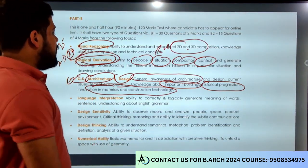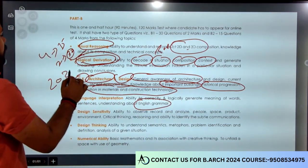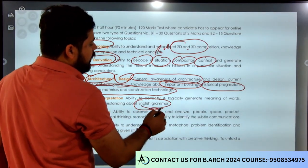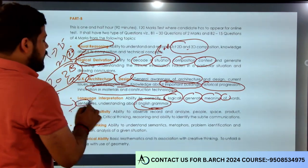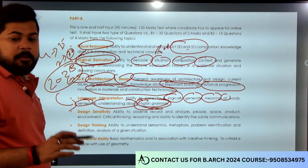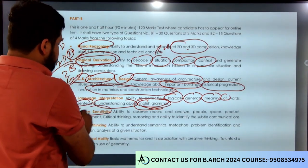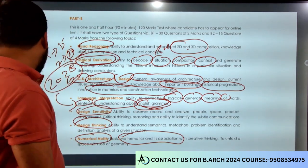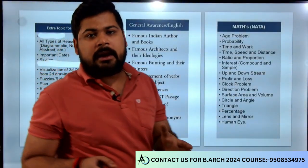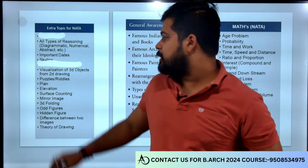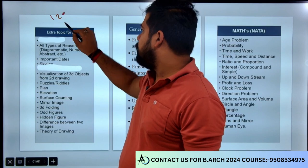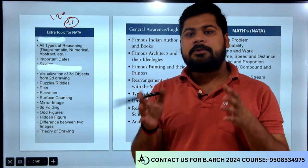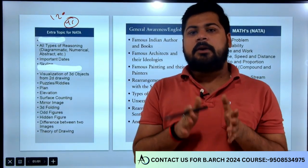Competition बहुत high जाने वाला है। English जो होता था पहले 2023 में, वो भी हटाया नहीं गया - English grammar cover करने पड़ेंगे, जिसमें logical meanings of words, sentence understanding about English grammar के regarding questions आएंगे। Part B का जो syllabus है, वो पहले की तरह है - NATA के पहले syllabus की तरह। 120 नंबर के total 45 questions हैं, जो पहले 2023 में जिस type के question आते थे उसी type के हैं - कहीं marks बढ़ाए गए हैं, कहीं घटाए गए हैं, लेकिन question उसी topic से आने वाले हैं।